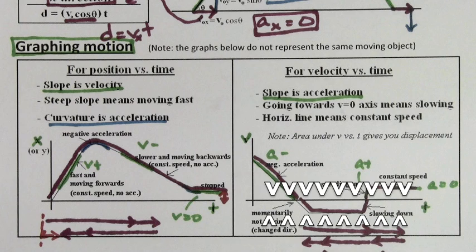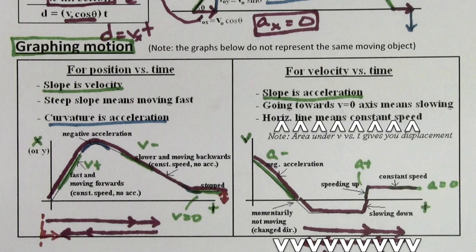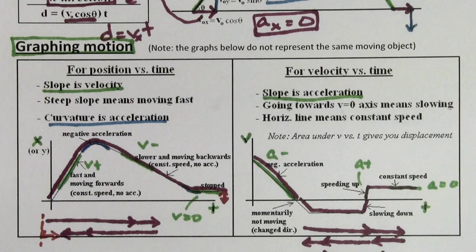If you're moving towards the time axis on a velocity graph, you're slowing down, and if you're moving away from the time axis, you're speeding up, regardless of whether your acceleration is negative or positive.